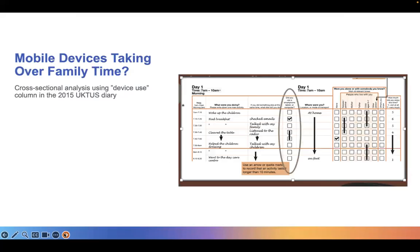We then asked whether mobile devices have colonized family time. To do this, we used the smartphone diary column that I showed you in video one. This column was only available in the 2014–2015 survey, so we were only able to conduct a cross-national analysis to explore the presence of smartphones in different aspects of family time.